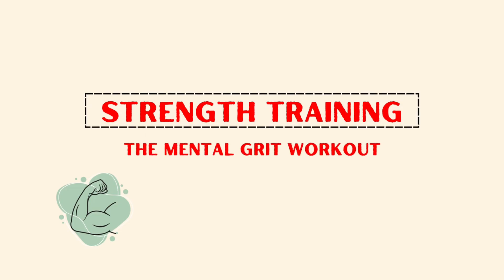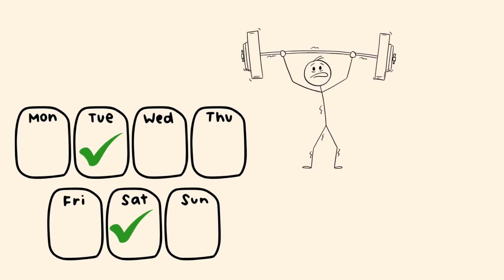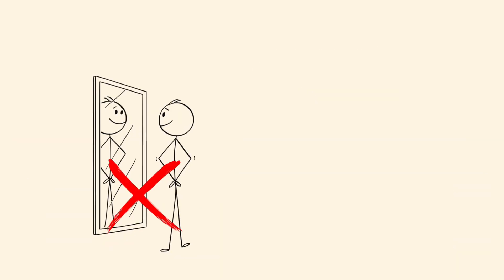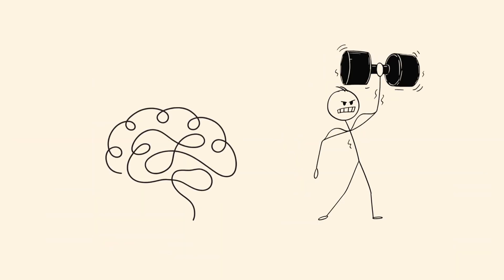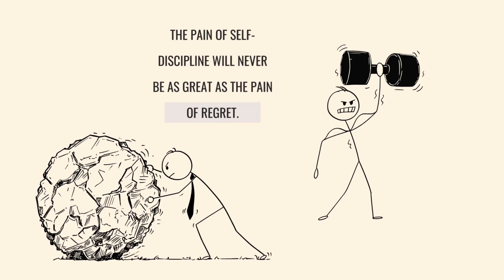Strength training. The mental grit workout. Twice a week, Ethan hits the gym for short strength sessions. Not for the mirror, but for the mind. Strength training teaches his brain to push through discomfort, the birthplace of real discipline.